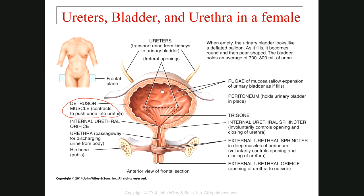In the posterior wall of the bladder, from inside, you can see a triangle-shaped structure which we call the trigone. This trigone has three corners: two corners are the openings of the right and left ureters, and the other corner is the opening of the urethra. In this trigone, we don't have any folds or rugae.